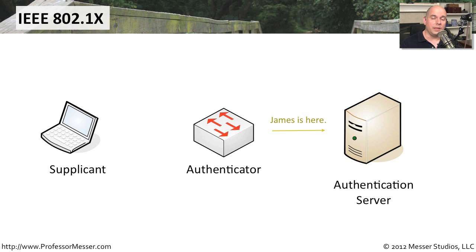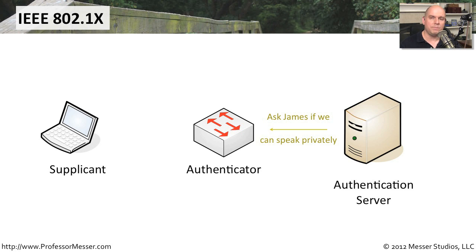The authenticator then talks to the authentication server and says it has a new user on the network. The authentication server responds that this user can be allowed on the network if they have the right credentials, and asks the authenticator to initiate a private communication with the client.